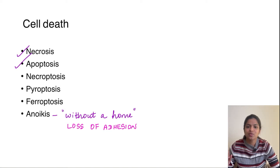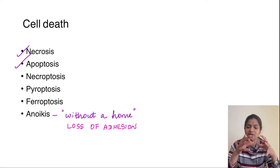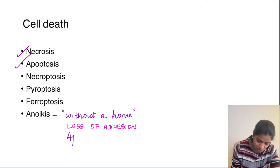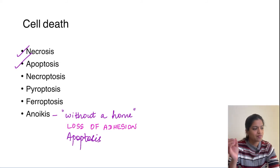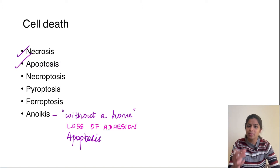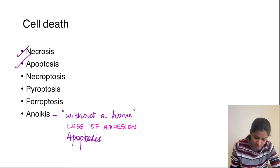Anoikis literally means 'without a home.' When there is loss of cell-cell adhesion, it leads to a form of cell death which is actually a form of apoptosis. Suppose there is a squamous epithelium with intercellular junctions. When these intercellular junctions are lost, the cell becomes a separate cell rather than part of the combined epithelium, and that cell undergoes a form of apoptosis called anoikis.